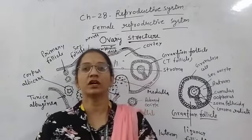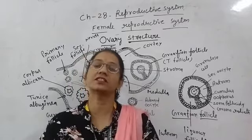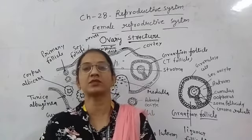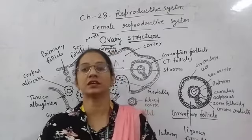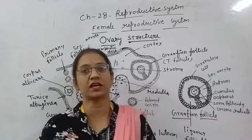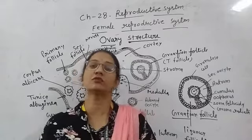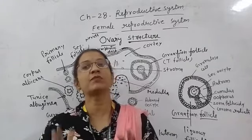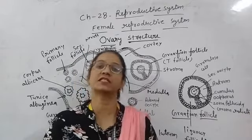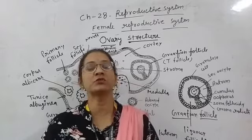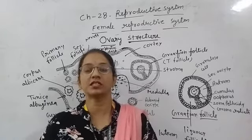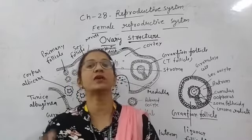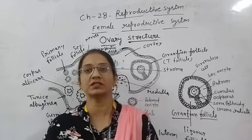We will talk about oogenesis — how ova formation occurs. When we talk about the female reproductive system, we must understand that the female body is born with follicles already present. But the follicles only become active when puberty arrives, because until puberty the whole reproductive organ system becomes functional.